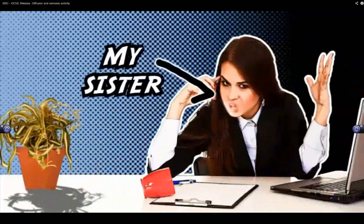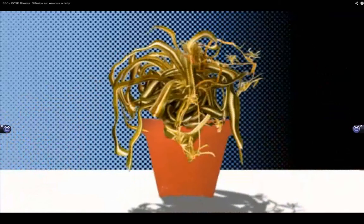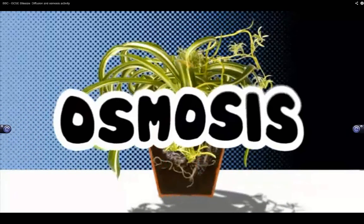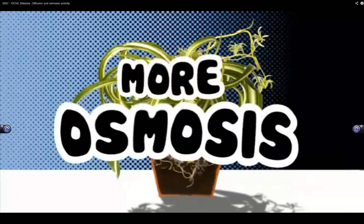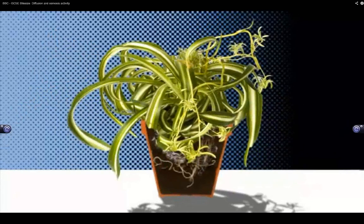Take a look at my sister's spider plant. Not looking too good, is it? If she'd remembered to water it, then it'd look like this. Water gets into plant root cells by osmosis, and then up into the rest of the plant by more osmosis. This makes the plant's tissue stiff, so they can hold up the leaves.